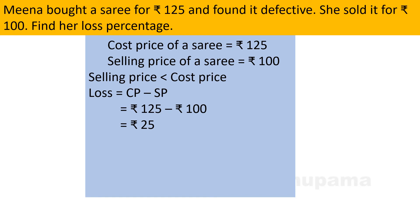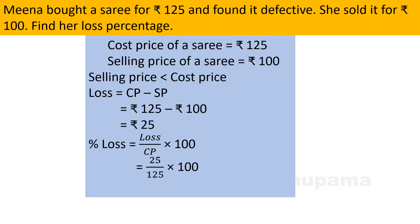Now we need to find out loss percentage. Always remember — whether profit percent or loss percent, we calculate on cost price only. The formula is loss divided by cost price, multiplied by 100. Loss is 25 and cost price is 125. So 25 divided by 125, multiplied by 100. Using the table of 25: 25 fives are 125, and 5 twos are 10, so the answer is 20 percent loss.